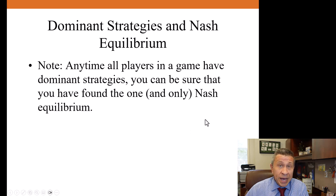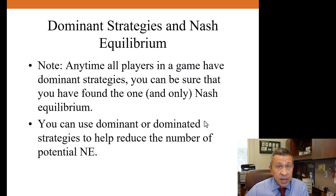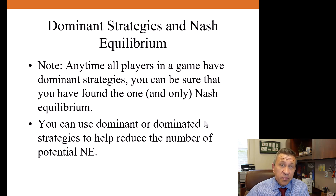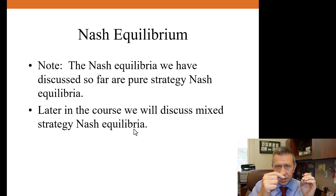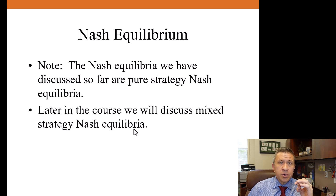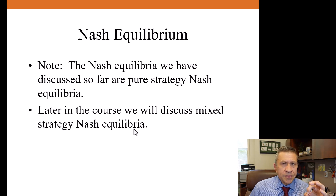We've talked a little bit about dominant strategies already. Anytime all players in a game have a dominant strategy, you can be sure you've found the one and only Nash Equilibrium of a game. You can use dominated strategies to help reduce the number of potential Nash Equilibria, which helps as you're trying to simplify games. The Nash Equilibria we've looked at so far are what we call pure strategy Nash Equilibria, where all players always want to do one specific choice all the time. There are games where you should be taking one strategy some percent of the time and a different strategy some other percentage — those are known as mixed strategy Nash Equilibria, which we will cover later in this course.